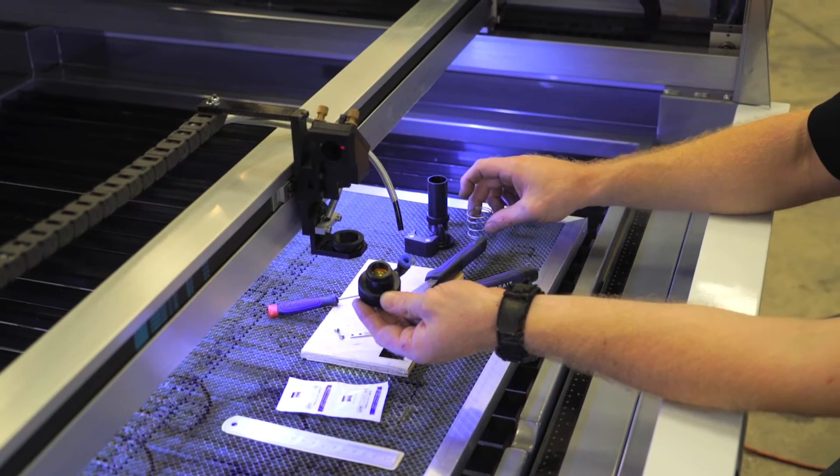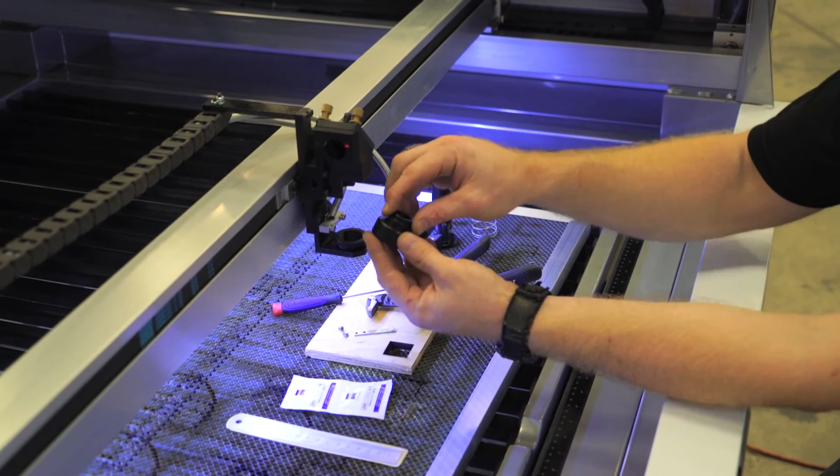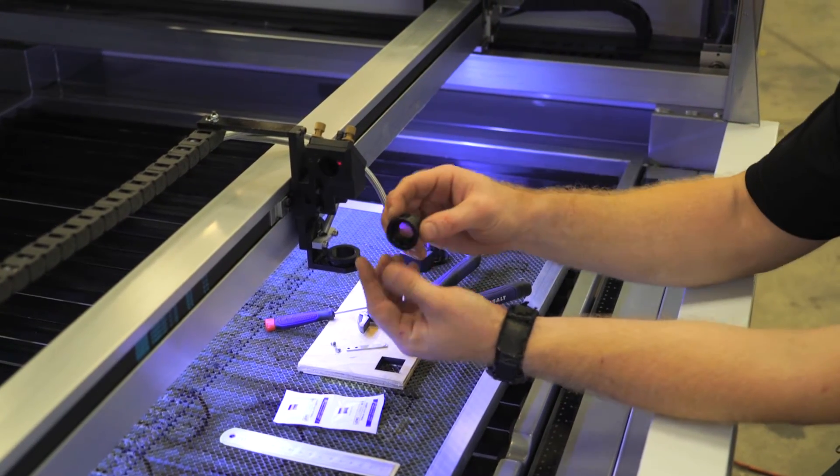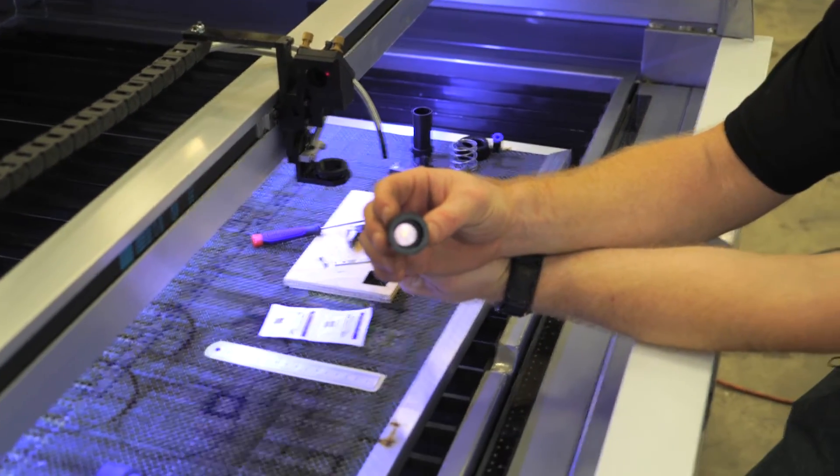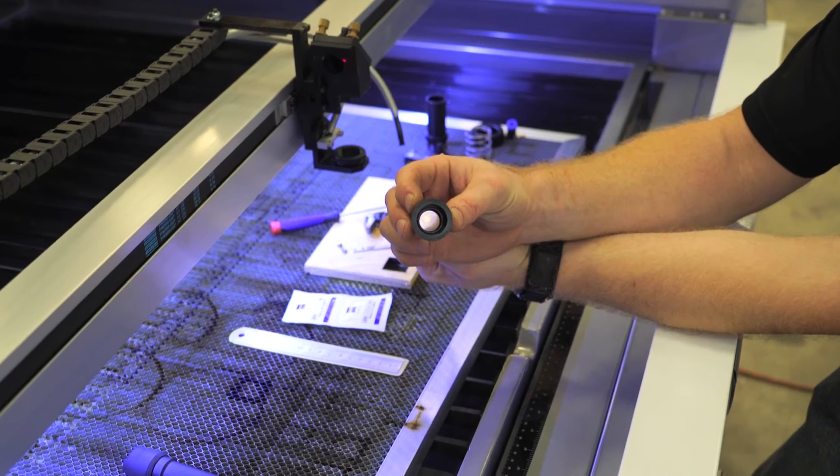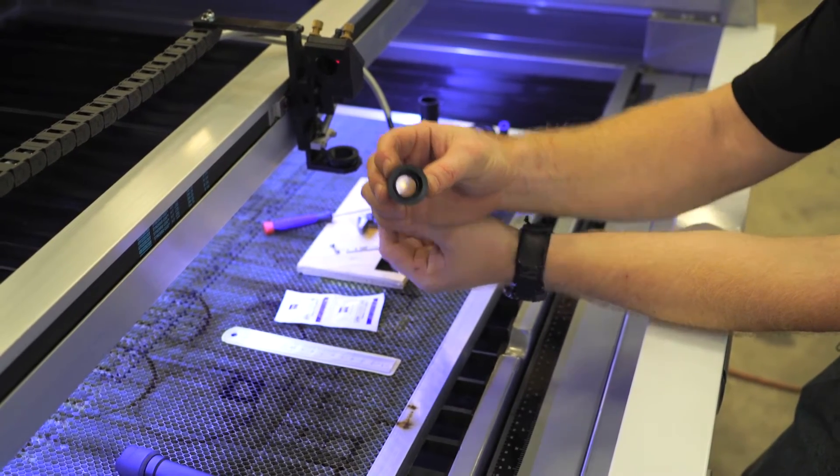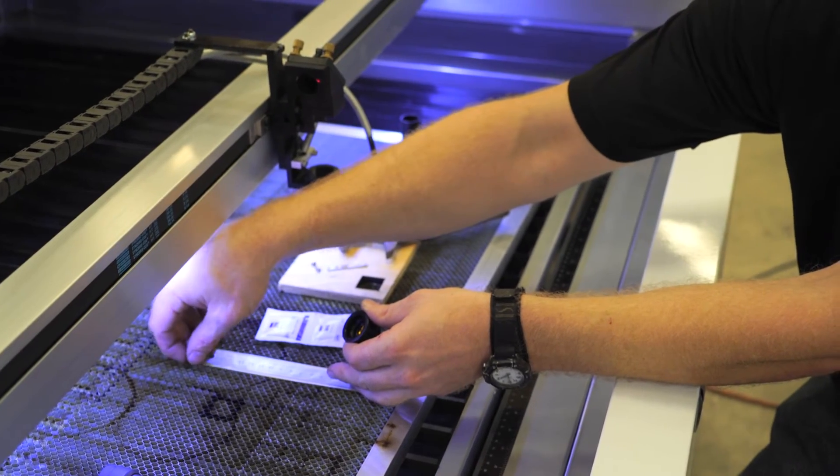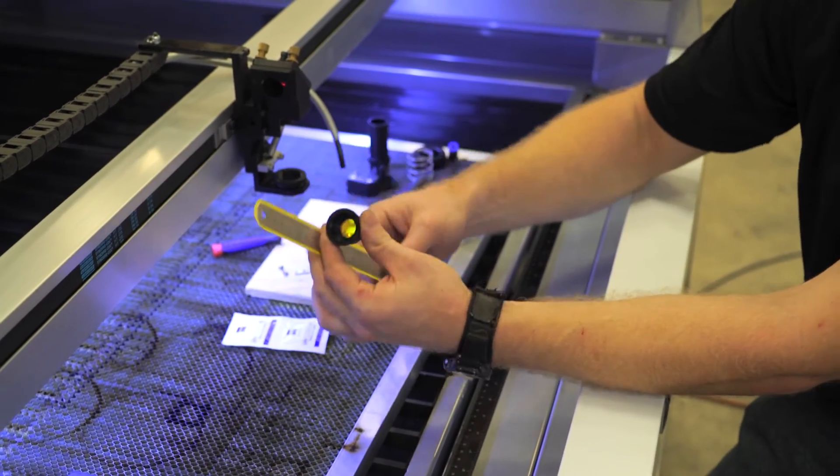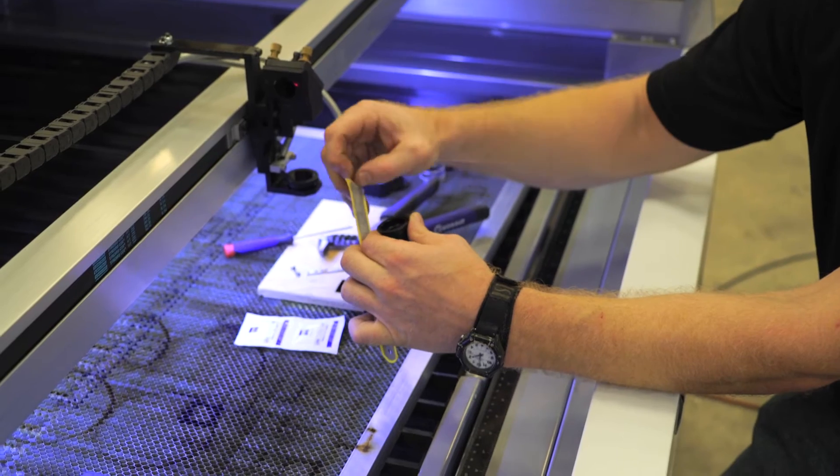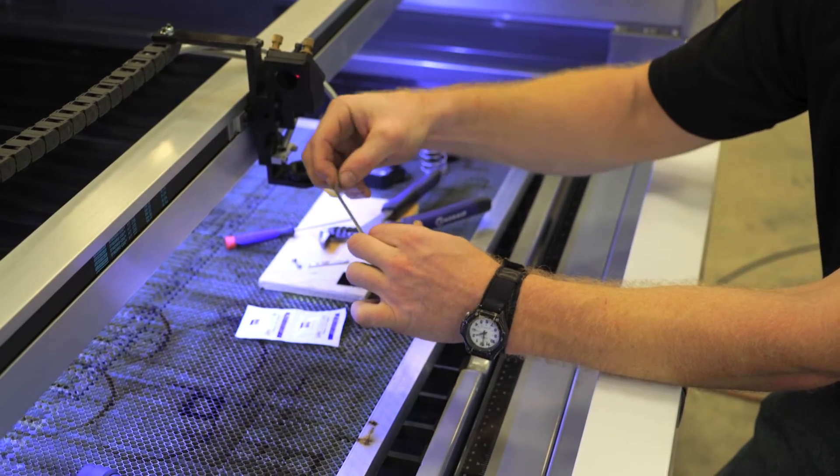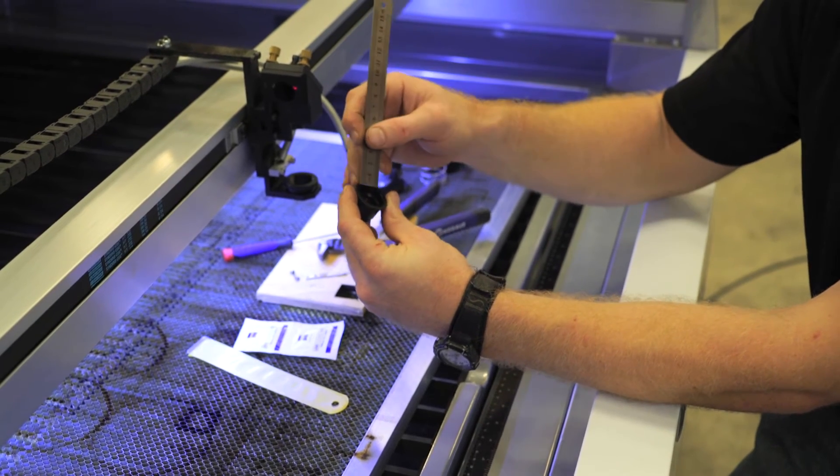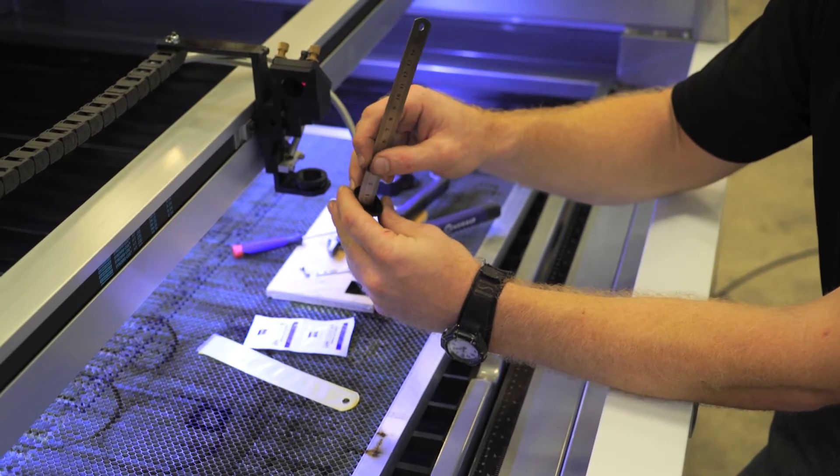Take off the spring. Pull this part out. You can see at the bottom is where your lens is. Next, take your ruler. Undo the washer that holds the lens in.